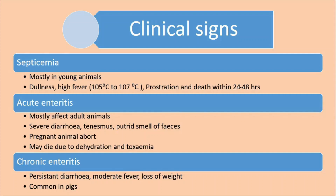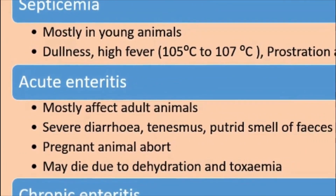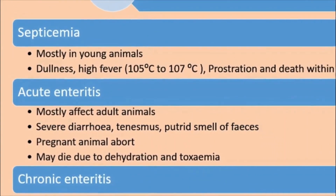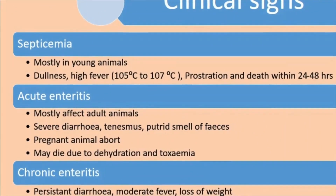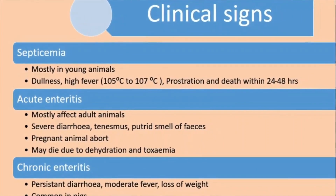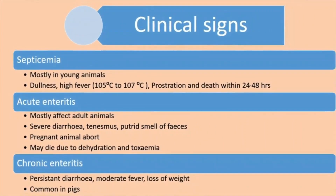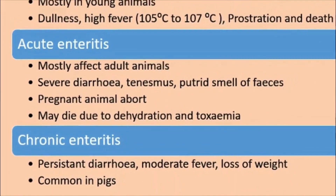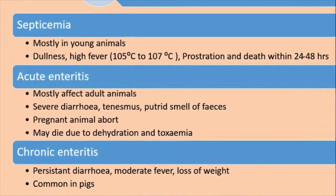In adult animals, what we usually see is the enteric form — the bacillus restricts itself to the intestine rather than getting into the blood vessels. In the intestinal form, we can divide into acute enteric form and chronic enteric form. In the acute enteric form, mostly seen in adult animals, it causes severe diarrhea and tenesmus — that means the movement of the sphincter of the anus. If the animal is pregnant, they will get aborted and may die due to dehydration and toxin. Chronic enteric form, again seen in adults, shows diarrhea, moderate fever, and loss of weight.